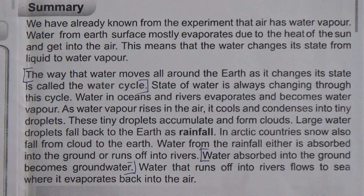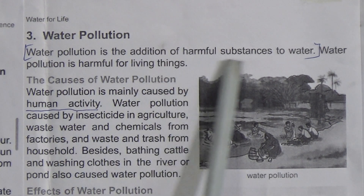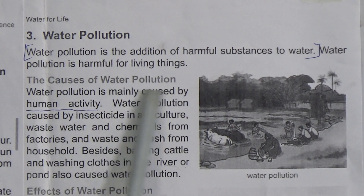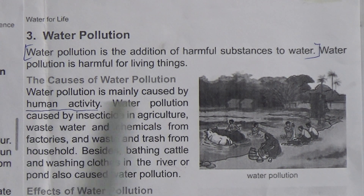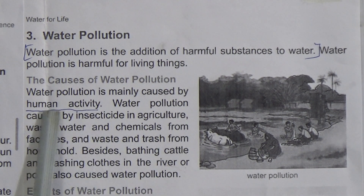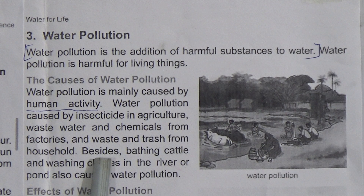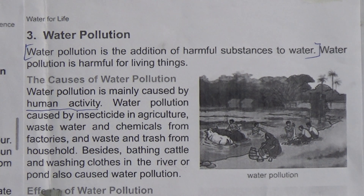Here is a picture of the water cycle. Now, what is water pollution? Water pollution is the addition of harmful substances to water. Water pollution is harmful for living things. Water pollution is mainly caused by human activity — this is important for fill-in-the-blanks. Water pollution is caused by insecticides in agriculture, wastewater and chemicals from factories, and waste and trash from households. Besides, bathing cattle and washing clothes in rivers or ponds also causes water pollution.